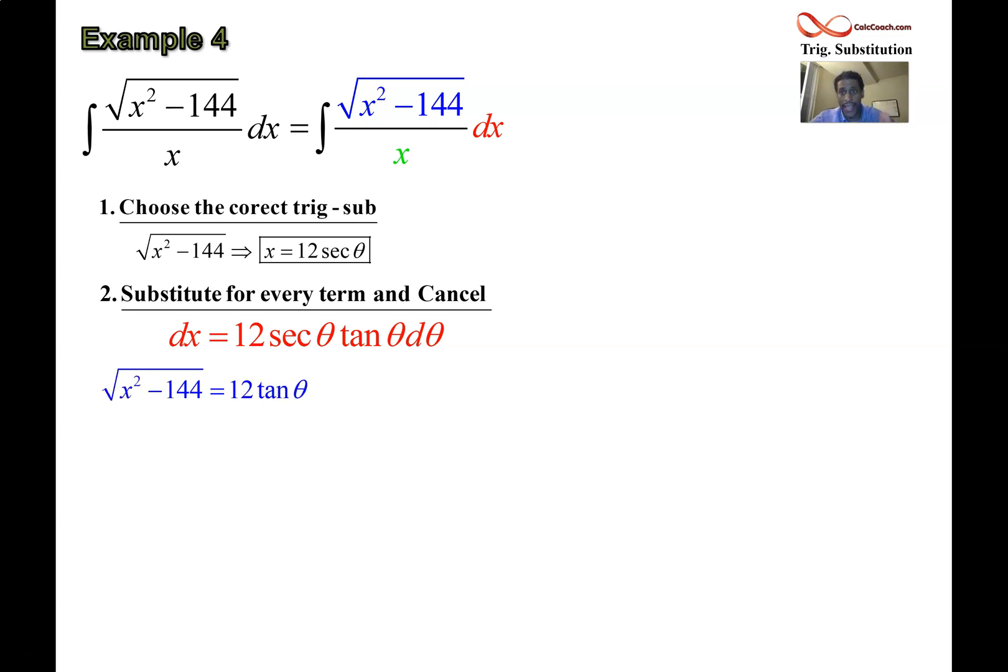The square root is 12 tan theta. We're assuming that we're dealing with x's that are bigger than a, so we're going to just be able to write exactly 12 tan theta. I'm going to say x is bigger than 12. That allows us to be able to just say that the radical becomes a tan theta. If we were dealing with x's that were smaller than 12, then we'd have to use the radical becoming negative 12 tan theta.